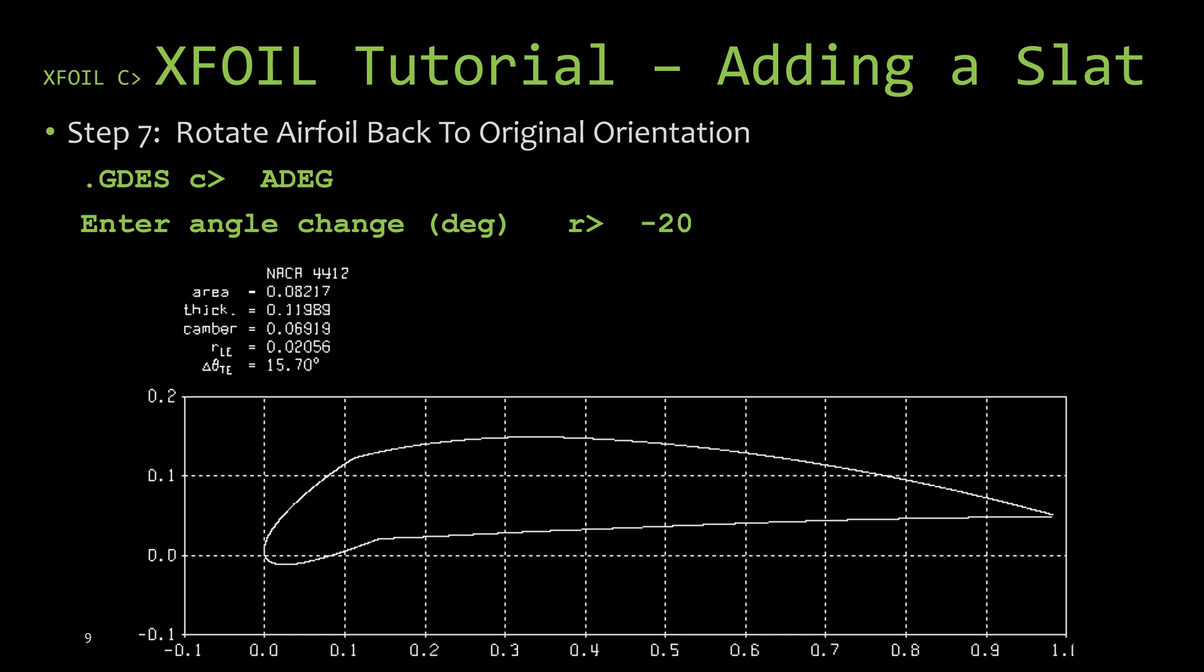So go ahead and type minus sign 20 and hit enter. And as you can see, the modified airfoil there in the secondary window, we now have our airfoil with a leading edge flap, or a slat.